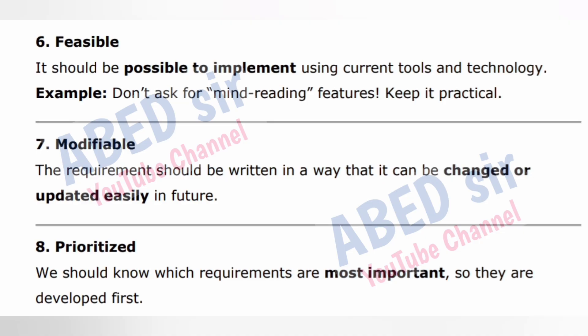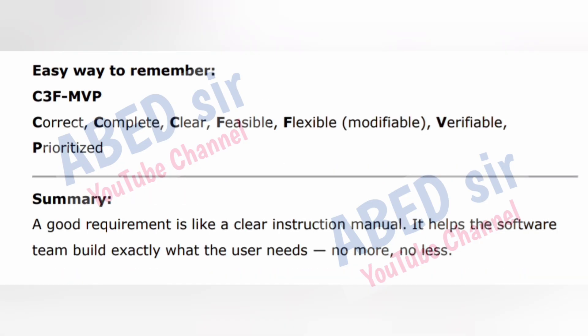7. Modifiable — the requirement should be written in a way that it can be changed or updated easily in future. 8. Prioritized — we should know which requirements are most important so they are developed first. Easy way to remember: C3F MVP — Correct, Complete, Clear, Feasible, Modifiable, Verifiable, Prioritized. Summary: a good requirement is like a clear instruction manual. It helps the software team build exactly what the user needs — no more, no less.